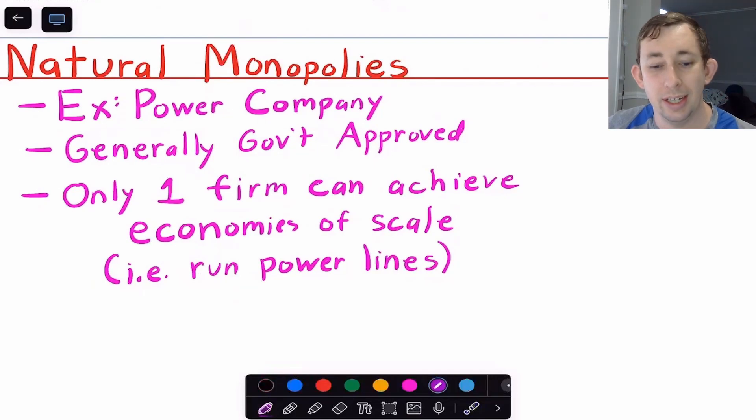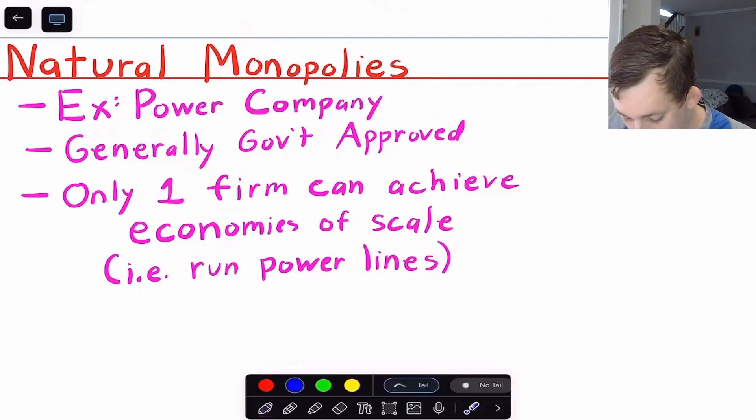A natural monopoly is a setting in which it makes the most sense to only have one company be involved in the market. So what in the world does that mean? So in a natural monopoly, you can think about it in terms of power grid. So there are power lines that bring power to your house. And it's not the case that you have 10 different companies all connecting power lines to your house.